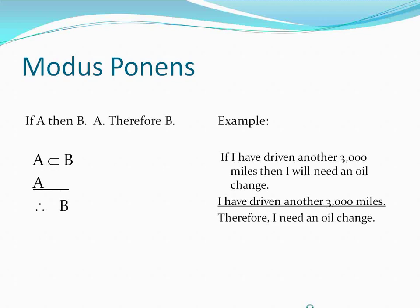The first valid form we're going to examine is the modus ponens: If A, then B. A, therefore B. An example: If I have driven another 3,000 miles, then I will need an oil change. I have driven another 3,000 miles, therefore I need an oil change.